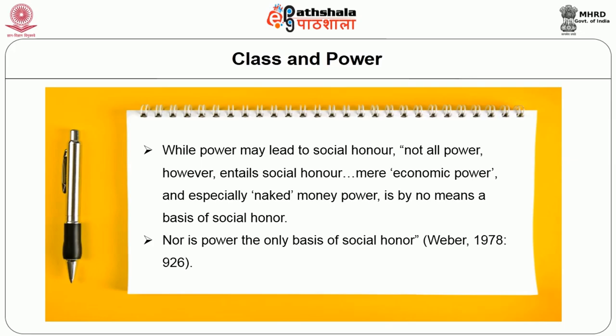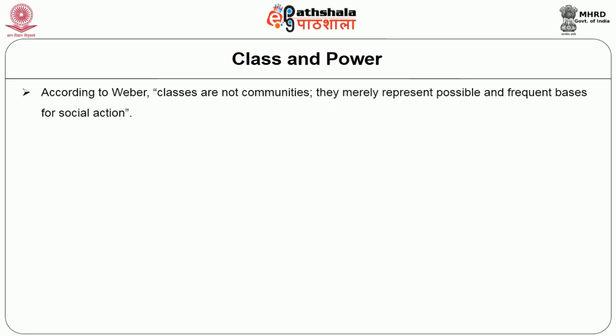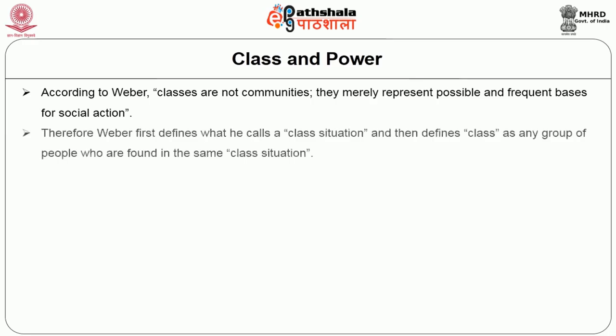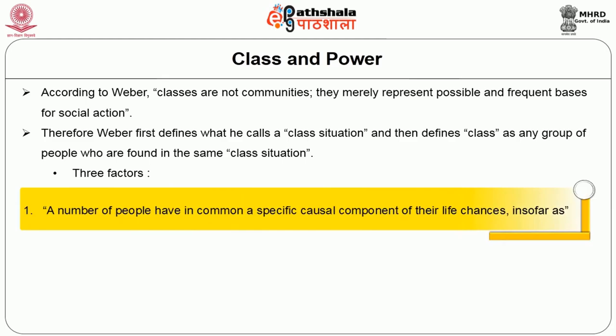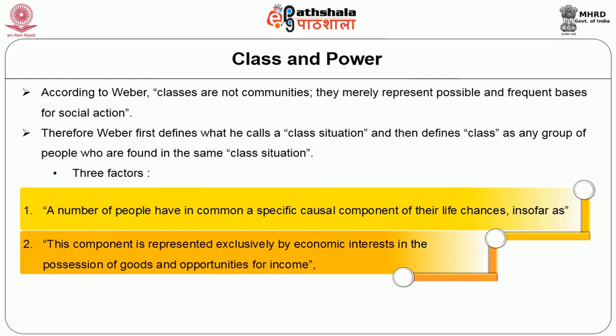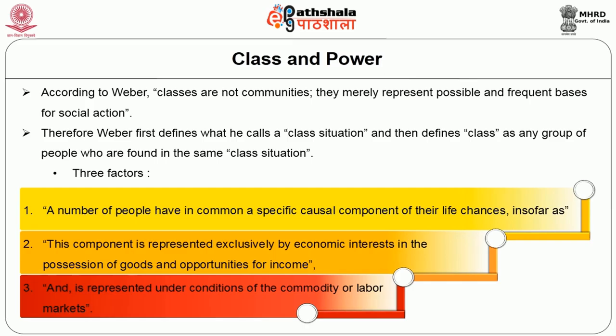Staying with economic power: according to Weber, classes are not communities — they merely represent a possible and frequent basis for social action. Weber first defines class situation, then defines class as a group of people found in the same class situation. He identifies three factors constituting class situation. He writes: we may speak of a class when a number of people share a specific causal component of their life chances, represented exclusively by economic interests in possession of goods and income opportunities, under conditions of the commodity or labour markets.